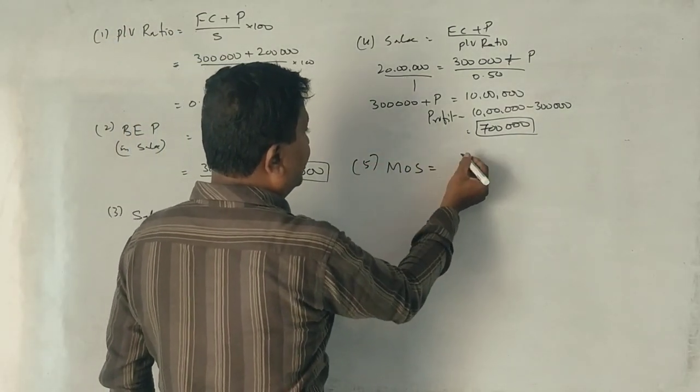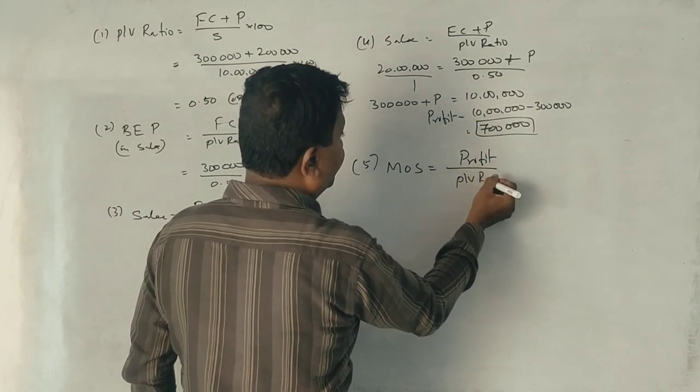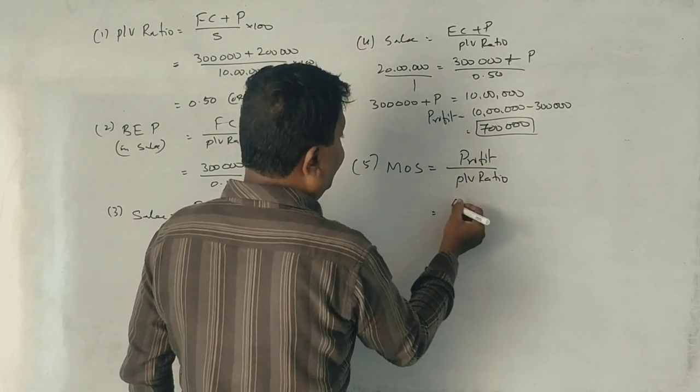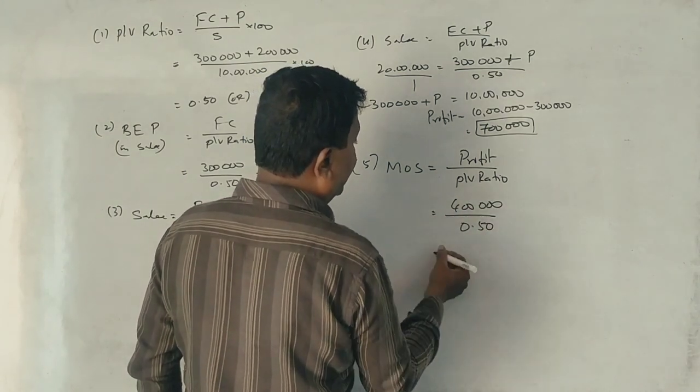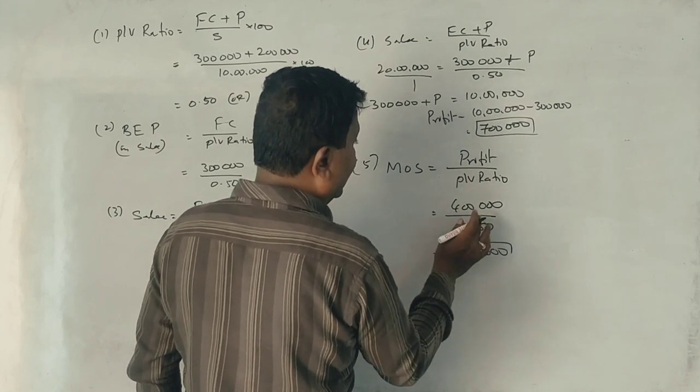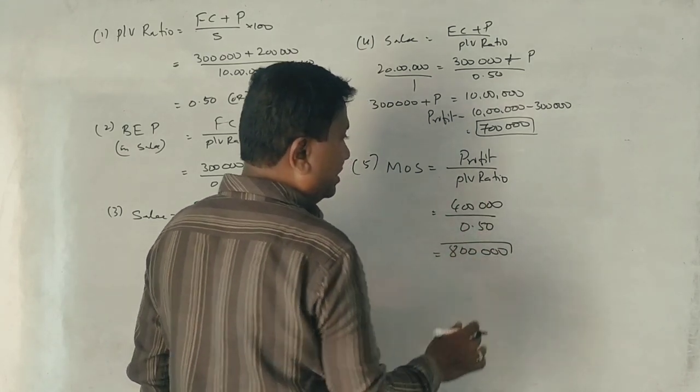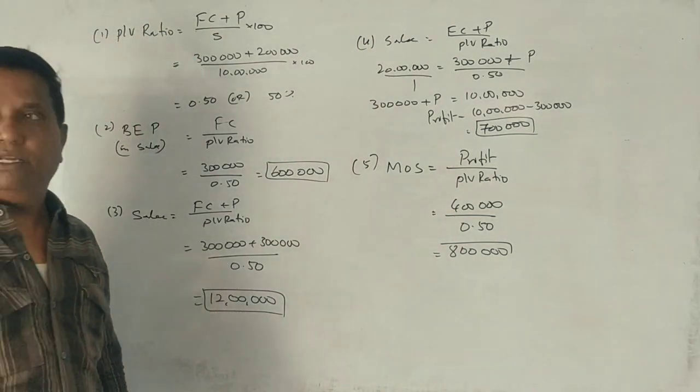Margin of safety at a profit of 4 lakhs. Margin of safety is equal to profit divided by P/V ratio. You see there 4 lakhs of profit. Margin of P/V ratio is 3 lakhs. 4 lakhs is equal to 100. 8 lakhs. Clear not?